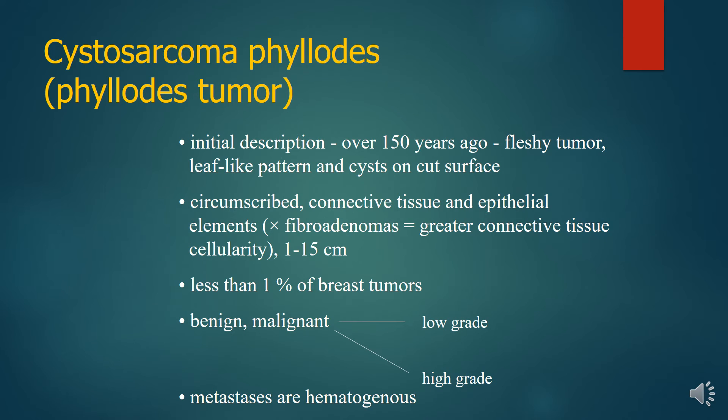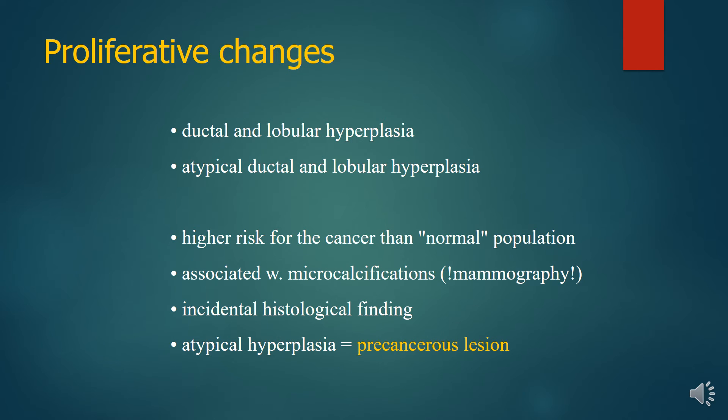Cystosarcoma phylloides, or phylloides tumor, was first described over 150 years ago. It is a fleshy tumor with a leaf-like pattern when sliced, with circumscribed connective tissue and epithelial elements, and constitutes less than one percent of breast tumors. It can be benign, malignant, or low- and high-grade, with hematogenous metastasis. Associated proliferative changes include ductal and lobular hyperplasia.